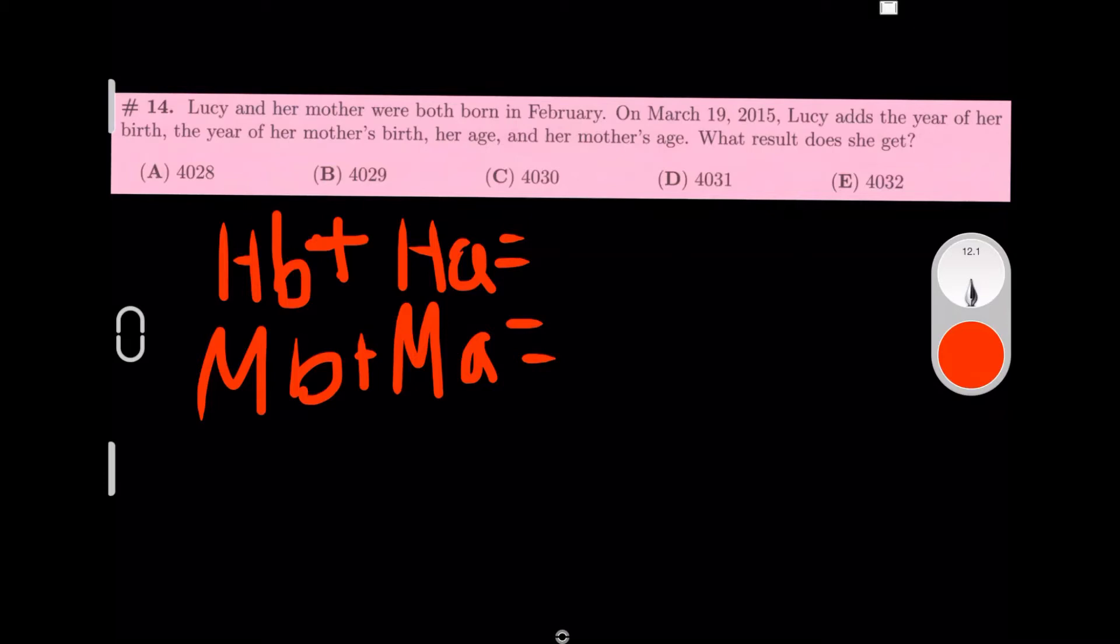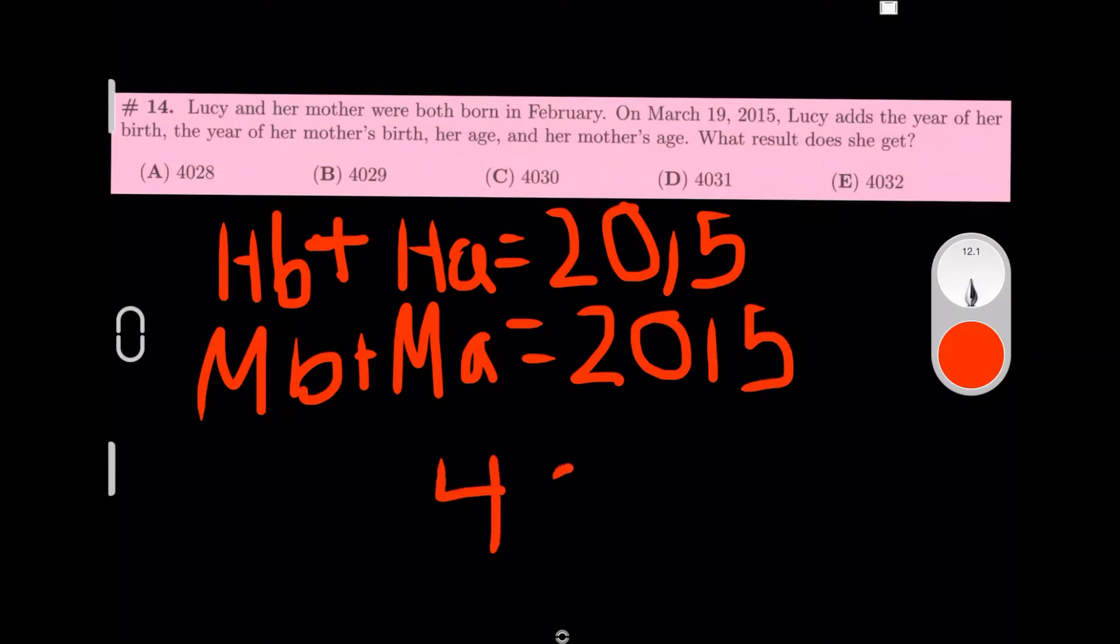March is after February. If you notice that if you add your age and the year that you were born, you would get the year you're in if you've already had your birthday. They both already have their birthday, so they would both equal 2015. So you would just do 2015+2015, and you would get 4,030, so the answer is C.